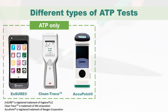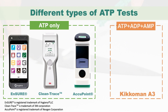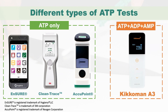Here are some common ATP tests that are used. The green dotted line indicates a test kit that only detects ATP. The orange dotted line represents an ATP test that can detect ATP, ADP, and AMP. Not all ATP tests detect ATP, ADP, and AMP with high sensitivity — only Kikomon A3 can detect all three.